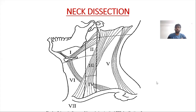Hello everyone, today we are going to talk about the various types of neck dissection. Head-neck cancers are one of the most common cancers worldwide and the neck is the most common site of metastasis for head-neck cancers. Therefore, we need to know the basic concepts of neck dissection and its various types. Before we move on, it is important to know the various stations of the lymph nodes in the neck region.